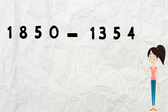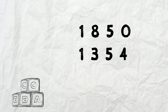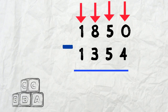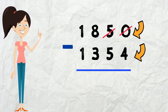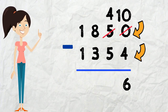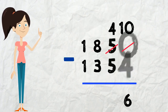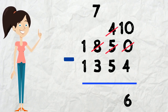Let's try another problem with 4-digit numbers: 1850 take away 1354. We set the numbers up with ones, tens, hundreds, and thousands each in their own column, then draw the line and minus sign. Starting with the ones place: 0 take away 4 — the top number is smaller, so we borrow from the neighboring 5. That changes the 5 to a 4 and the 0 to a 10. So 10 take away 4 equals 6.